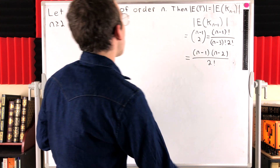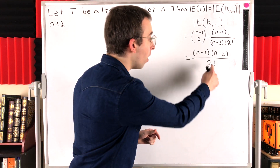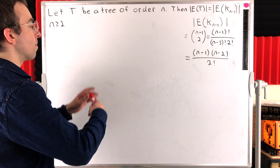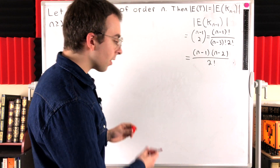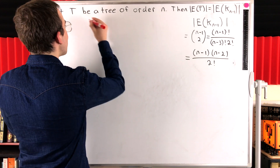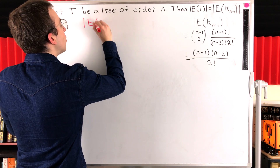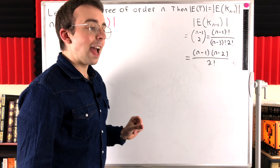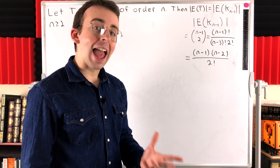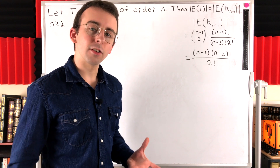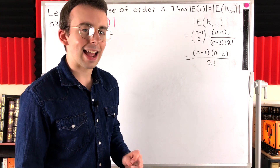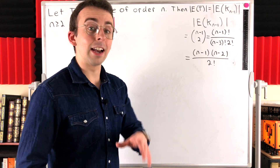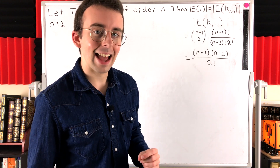Now, if we can show that the complement of a tree graph on n vertices also has this many edges, then we'll be done. Suppose that we have a tree of order n. A tree graph on n vertices will always have n minus one edges — a connected graph with no cycles has one less edge than it has vertices. I'll leave a link in the description to some lessons about trees and a proof of that result.